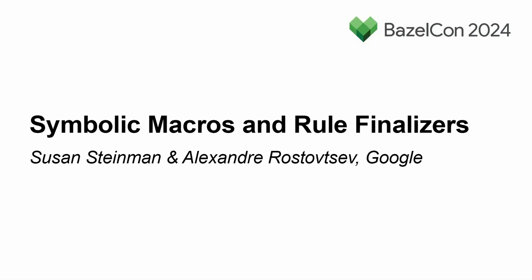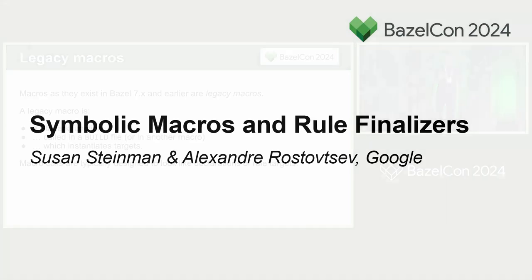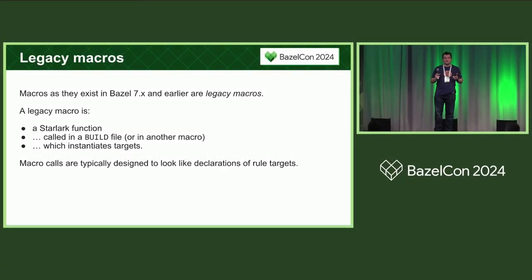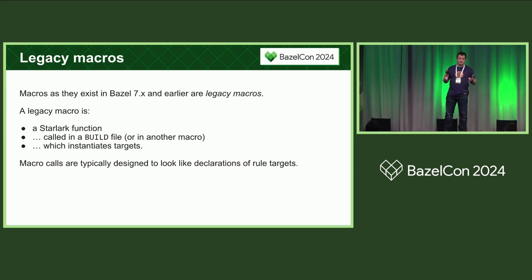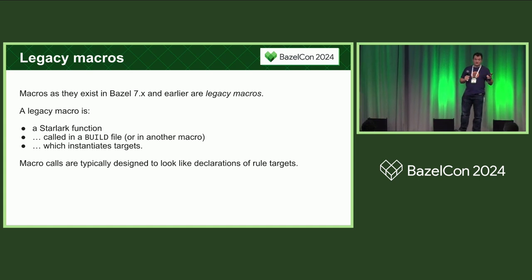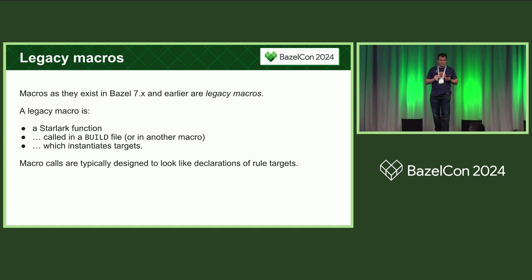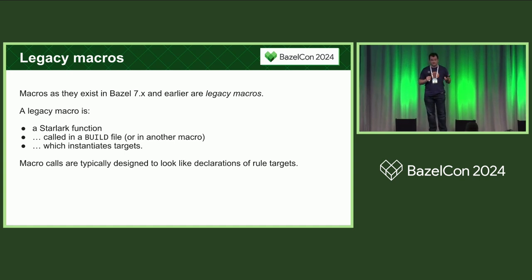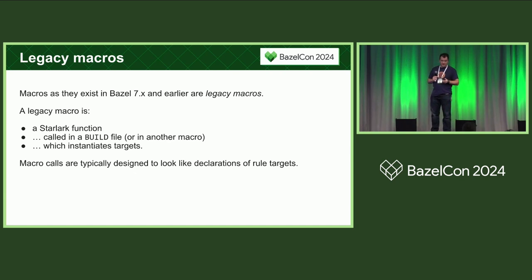To start with, we wanted to motivate why the new feature is needed by talking a little bit about the macro system as it exists in Bazel 7 and earlier, which we are retroactively naming legacy macros. A legacy macro is simply an arbitrary Starlark function which is called in the build file or in another macro, and which instantiates some targets. Typically, authors of legacy macros create them so that the call looks like the declaration of a rule target.